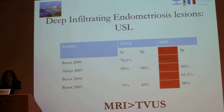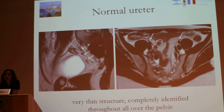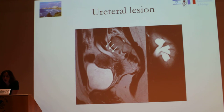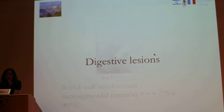For deep infiltrating endometriosis lesions — what is better, ultrasound or MRI? MRI is quite superior in terms of sensitivity across all studies. Regarding the ureter, it is very important to tell the surgeon whether there is ureteral involvement, because surgery is quite difficult when the ureter is involved. With MRI you can follow the normal ureter and identify the level of stenosis together with the associated renal dilatation.